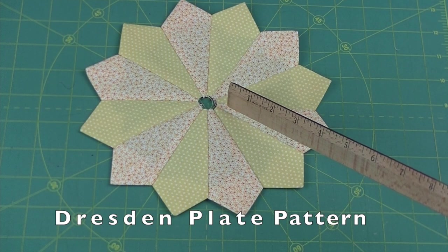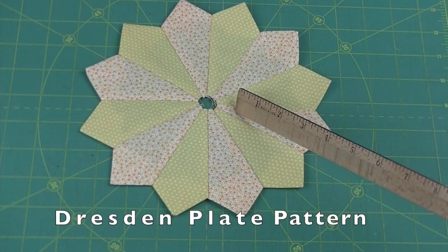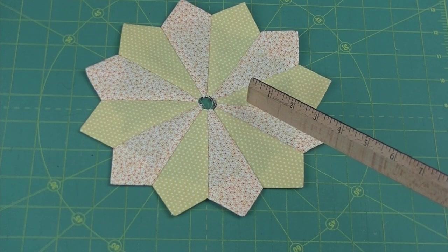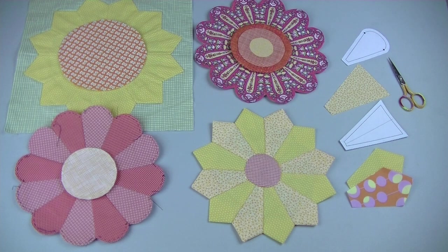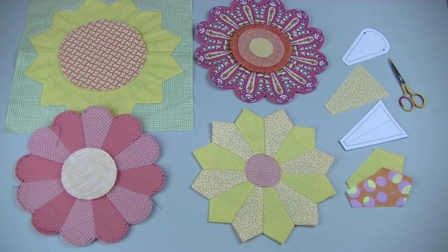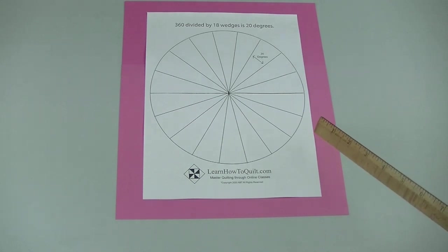The Dresden Plate was a very popular pattern in the U.S. in the 1920s and 30s. It's circular in shape and was named after the fancy pattern dishes made in Dresden, Germany. There are many different variations of this pattern.